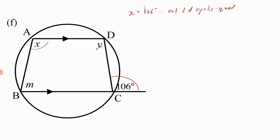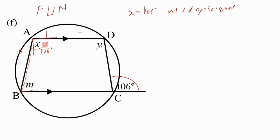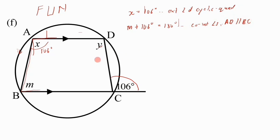To find m, we fill in 106 degrees and notice we are given a pair of parallel lines: AD parallel to BC. With parallel lines we look for co-interior angles. These form a U-shape, so co-interior angles are supplementary — they add up to 180 degrees. Therefore m plus 106 degrees equals 180 degrees, co-interior angles, AD parallel to BC. So m equals 180 minus 106, giving m equals 74 degrees.